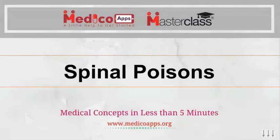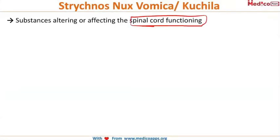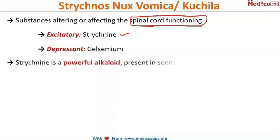Spinal poisons are substances that alter spinal cord function. The first one we are looking at is Strychnos nux-vomica, also known as Gucilla. The excitatory component in it is strychnine, and the depressant is gelsemium. Strychnine is a powerful alkaloid present in the seeds of Strychnos nux-vomica.